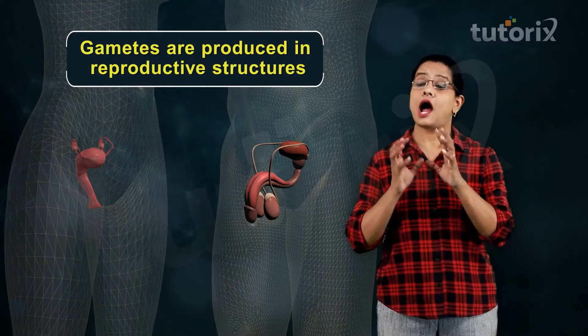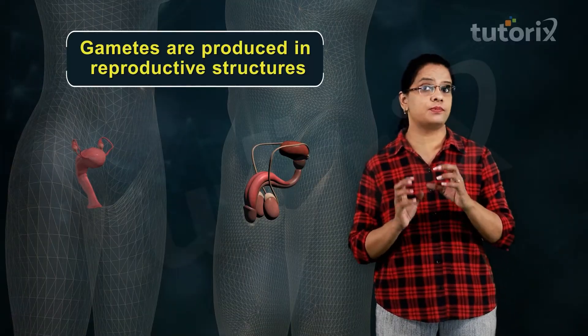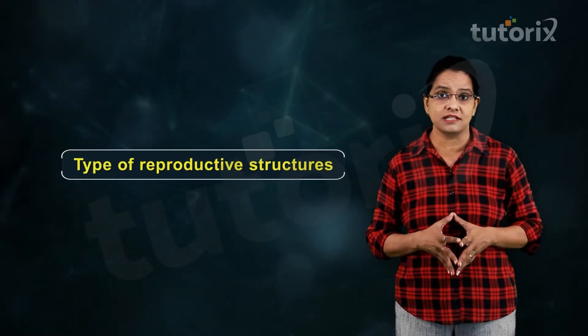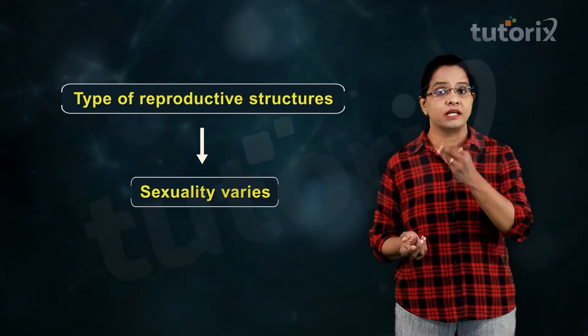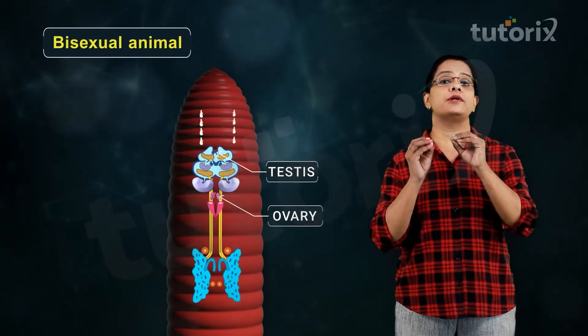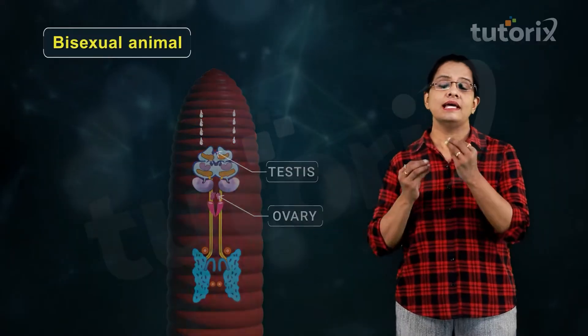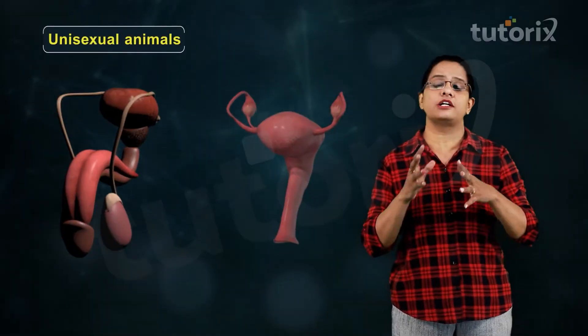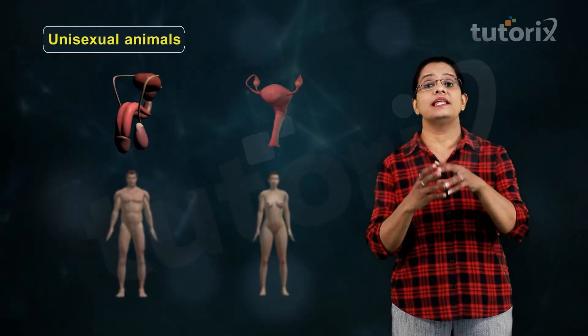Gametes are produced in reproductive structures, which vary across the plant and animal kingdoms. Based on what type of reproductive structure is present in an organism, the sexuality of the organism varies. If male and female reproductive structures are present in the same individual, that individual is called bisexual; if they are present in different individuals, those individuals are called unisexual.